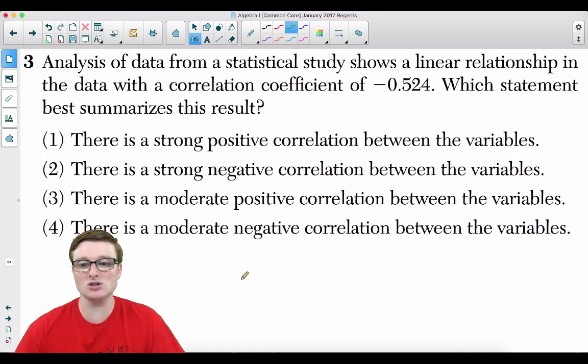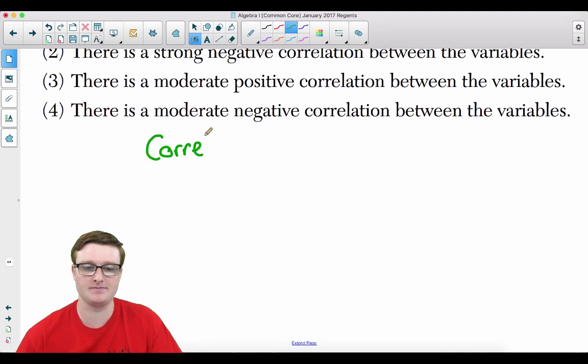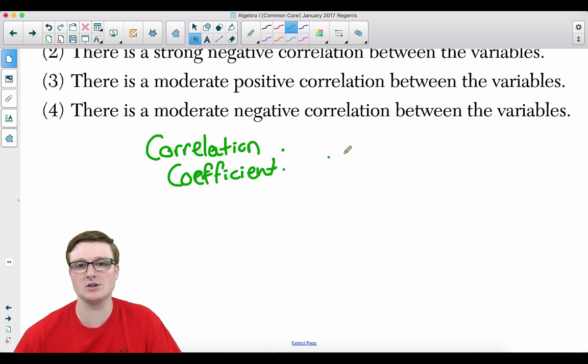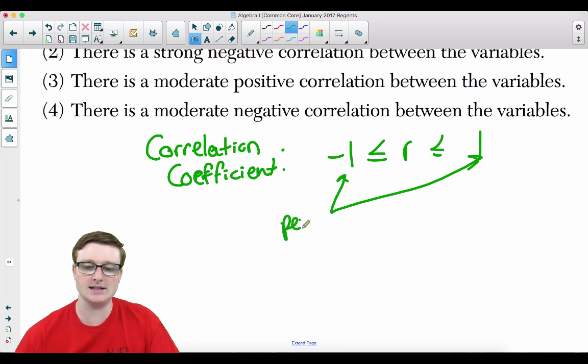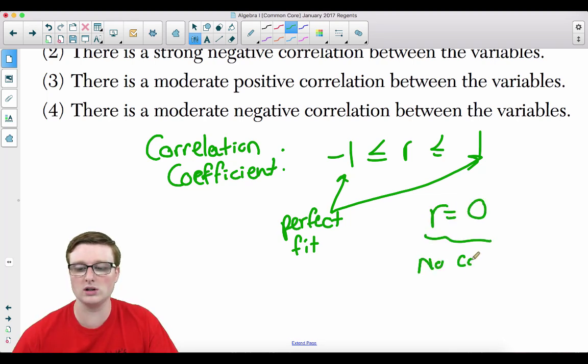Number 3. Analysis of data from a statistical study shows a linear relationship in the data with a correlation coefficient of negative 0.524. Which statement best summarizes this result? What you need to understand is that the correlation coefficient lies between two numbers. It lies between negative 1, which is less than or equal to r, which is less than or equal to 1. If it is negative 1 or positive 1, it is considered a perfect fit. And if r is equal to 0, this means that there is no correlation between the variables.